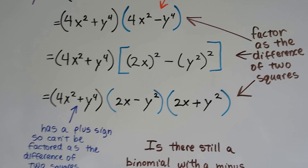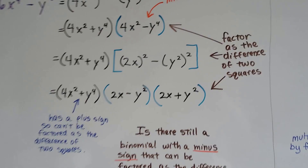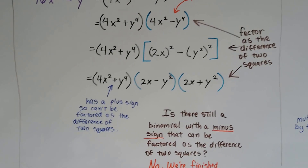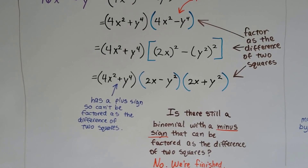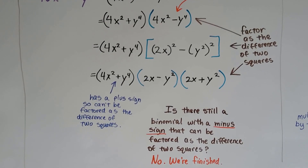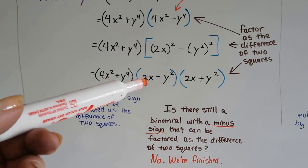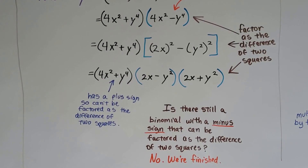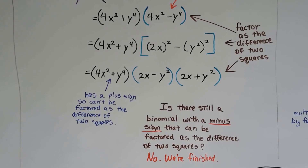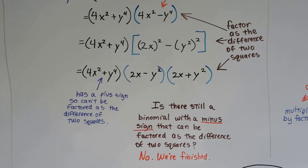We did it a couple of times. We ask ourselves: is there still a binomial with a minus sign that can be factored as the difference of two squares? Nope — we're down to a 2. So we're finished. We don't have any more squares to deal with.